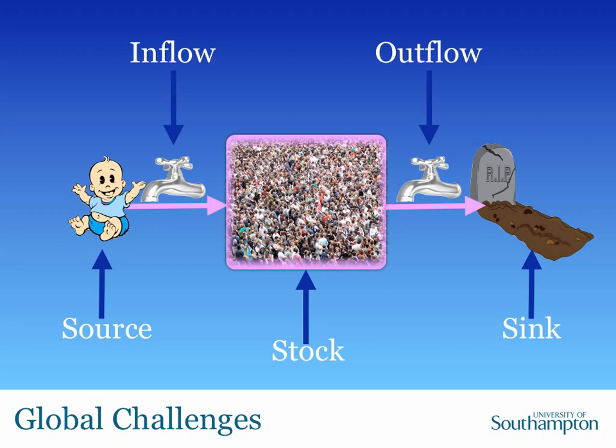Rather than people, you could imagine this was a bath. As you open the tap to let water in, if there's an outflow — maybe another tap by the plug — you can adjust the water level by either increasing the inflow, letting more water in, or decreasing the outflow so the water level goes up. Or the inverse: decrease the amount going in and increase the amount going out. So there's an inflow and an outflow from a source to a sink via a stock.